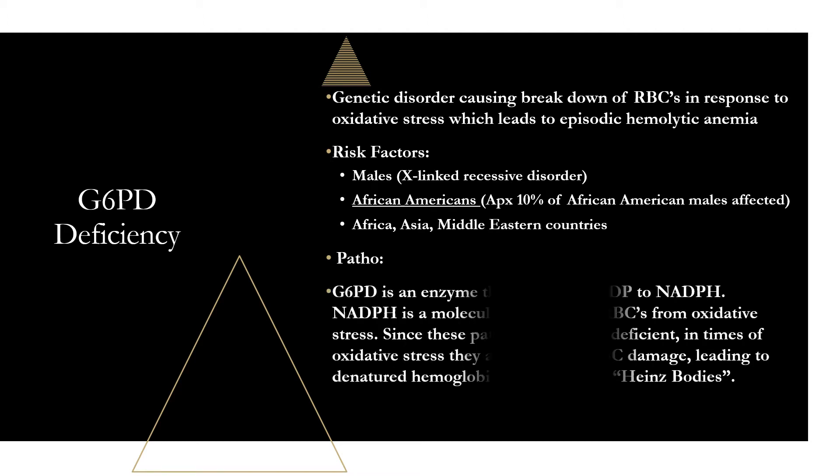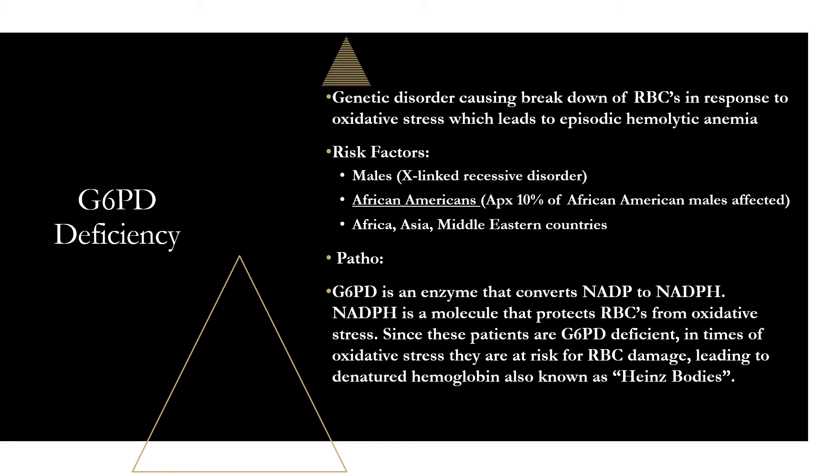As far as the pathophysiology, G6PD is an enzyme that protects red blood cells from damage by converting NADP to NADPH. NADPH is a molecule that generates free radicals in immune cells and protects red blood cells from oxidative stress. Without sufficient G6PD, patients can't create NADPH, leading to oxidative damage and denatured hemoglobin, also known as Heinz bodies — a very important key term.